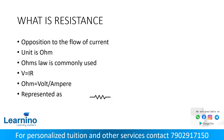Mainly Ohm's law is used for calculating the resistance. What is Ohm's law? Ohm's law states that at constant temperature, the voltage is directly proportional to the current passing through it. So V by I is equal to R, where R is the resistance.